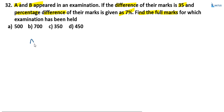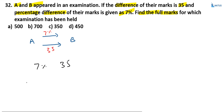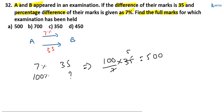Here, two persons A and B are there. The difference between percentages is 7%, and the difference between their marks is 35. So 7% of the marks is equal to 35. Now what we require is total marks — that is 100% — which is equal to 100 by 7 into 35, giving us 500. Option A is the correct answer.